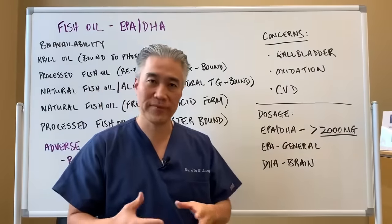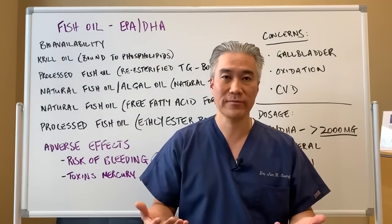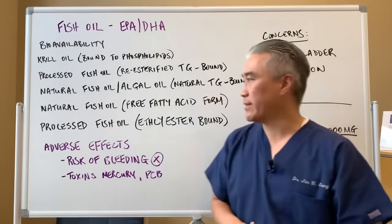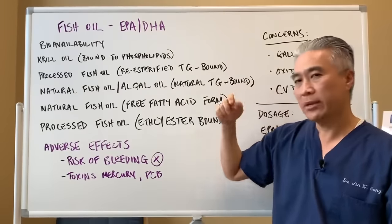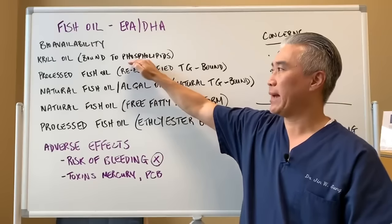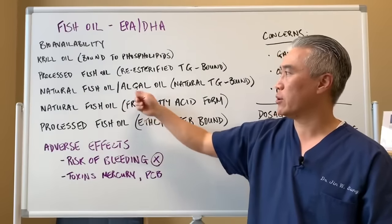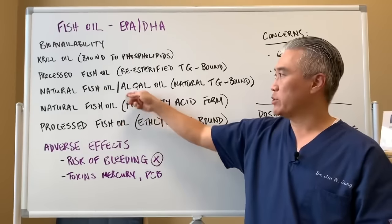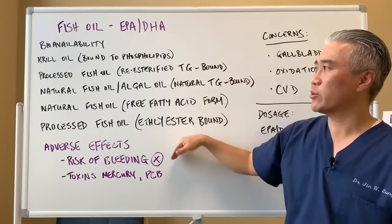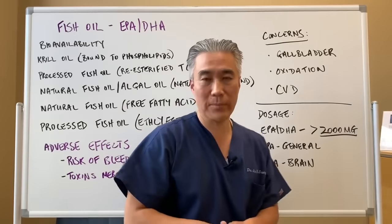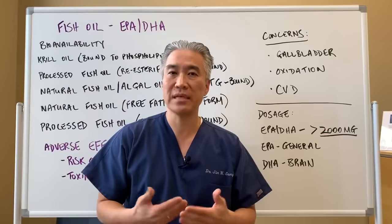EPA is great for generalized inflammation and function. DHA is really good for the brain. Formulations with higher DHA will be more expensive. My best recommendation is to go for the natural triglyceride form — natural fish oil or algal oil, natural triglyceride-bound. There's nothing bad about krill oil or re-esterified forms, but going natural is preferable. For vegetarians, algae is a great source. Dosing should be above 2,000 milligrams of EPA DHA for therapeutic benefit. Always talk to your physician about taking fish oil with regard to other medications.